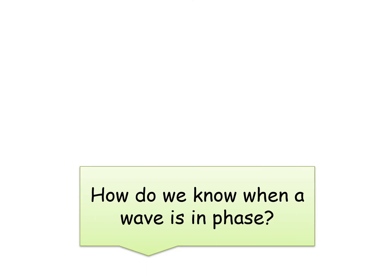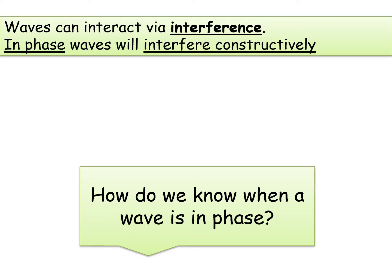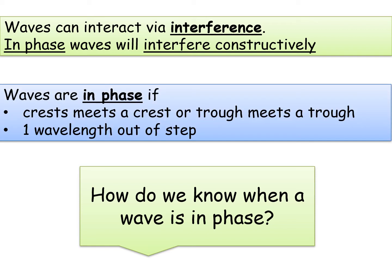Before we get into path difference, let's look at a reminder: waves can interact via interference. In-phase waves will interfere constructively. Waves are in phase if the crest meets a crest or a trough meets a trough — so they are either one wavelength out of step or multiples of one wavelength: zero, one, two, three, four, five, six, seven, eight wavelengths.